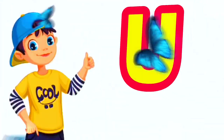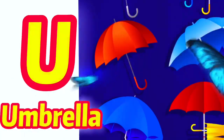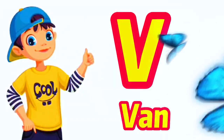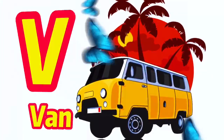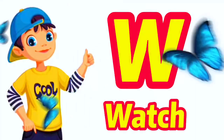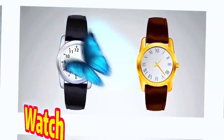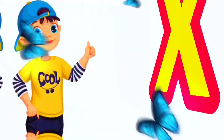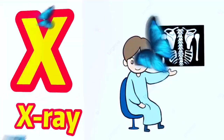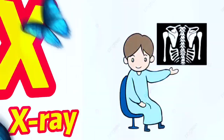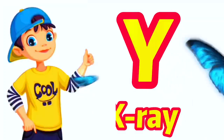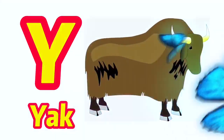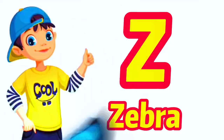U for umbrella, V for whale, W for watch, X for x-ray, Y for yak, Z for zebra.